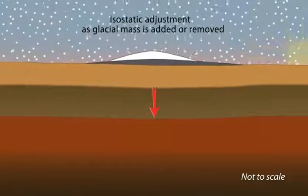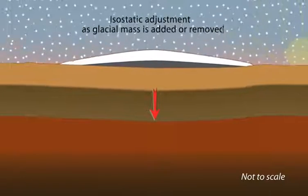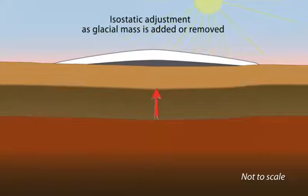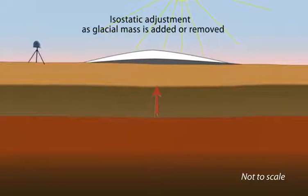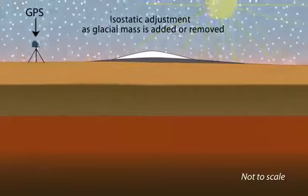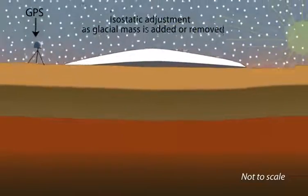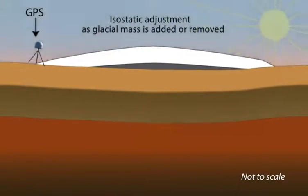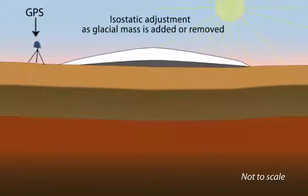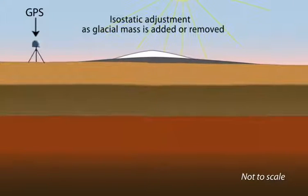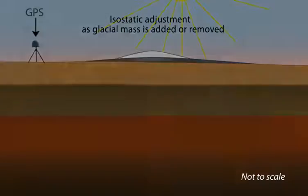The thickening and thinning of ice sheets is one example of a process that adds or removes mass from the Earth's surface. Not noticeable by humans, only sensitive instruments such as GPS can measure this subtle vertical change of the bedrock surface. Isostatic adjustment, exaggerated here, occurs on short time scales and is sensitive to even small changes in mass.